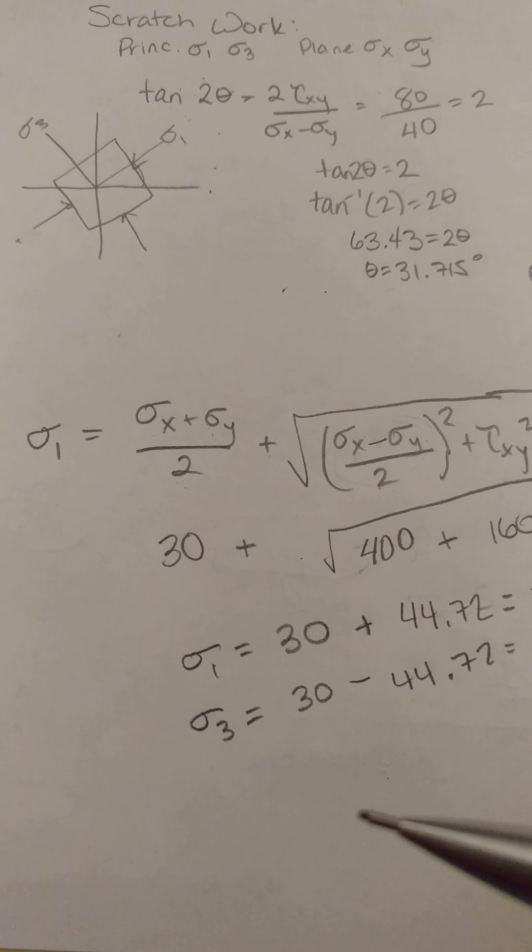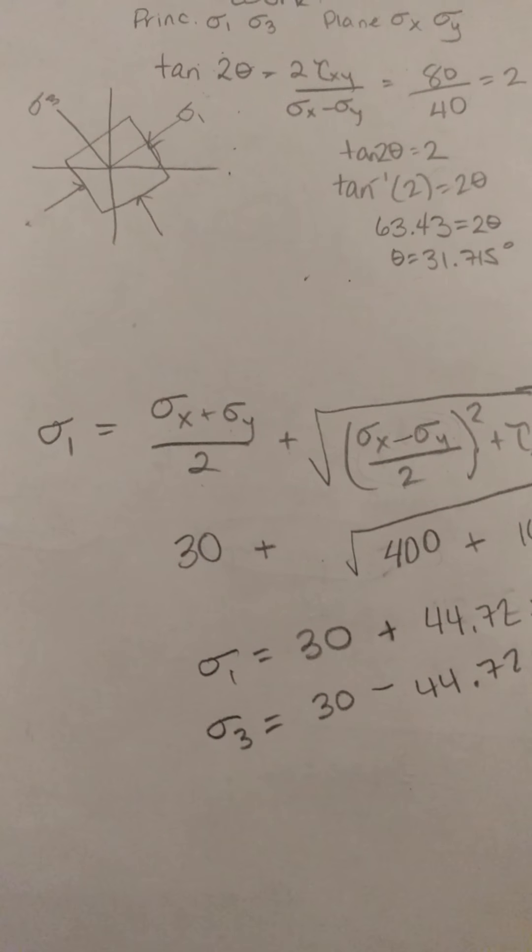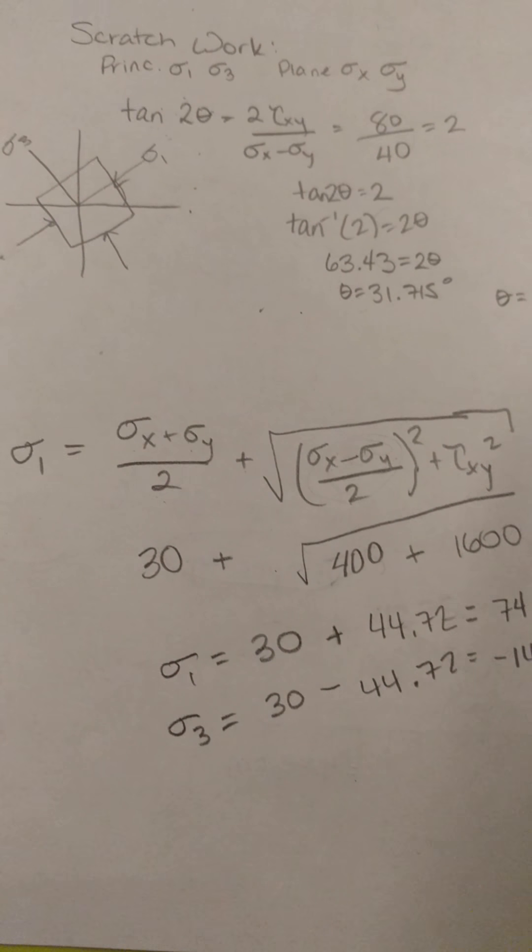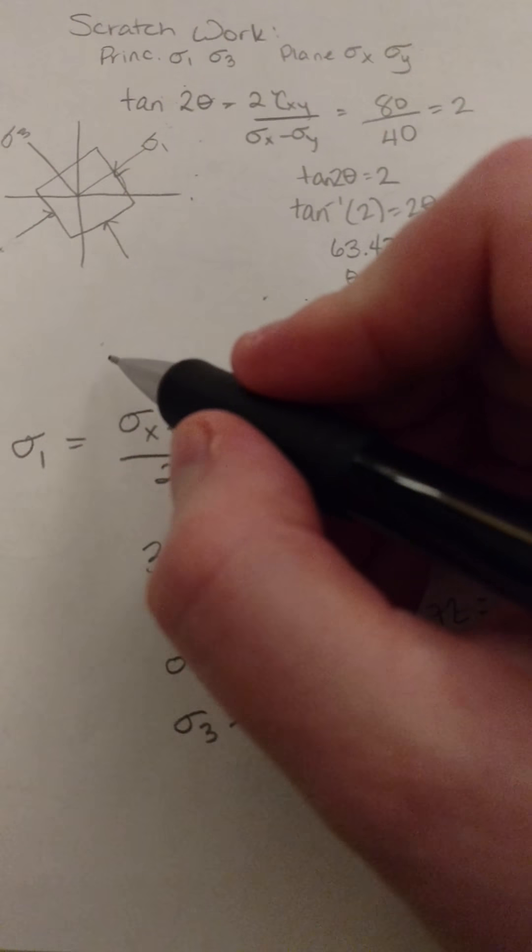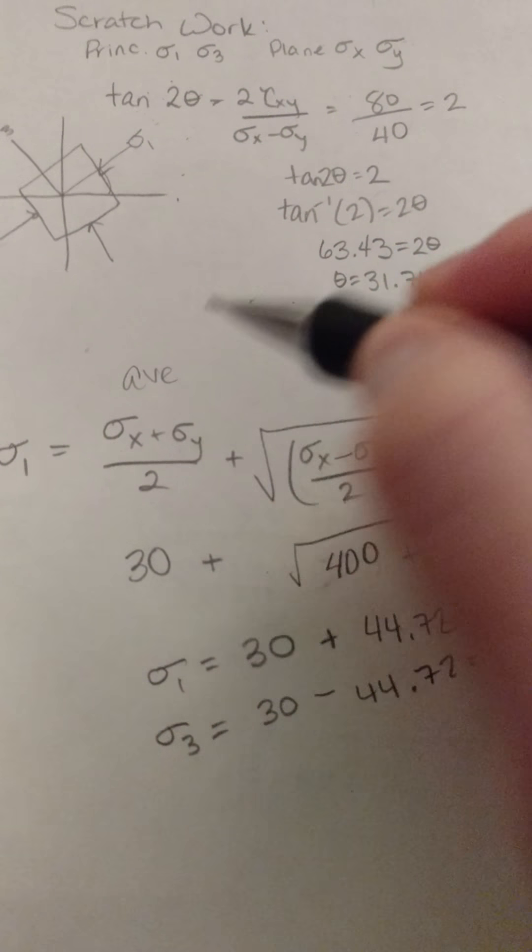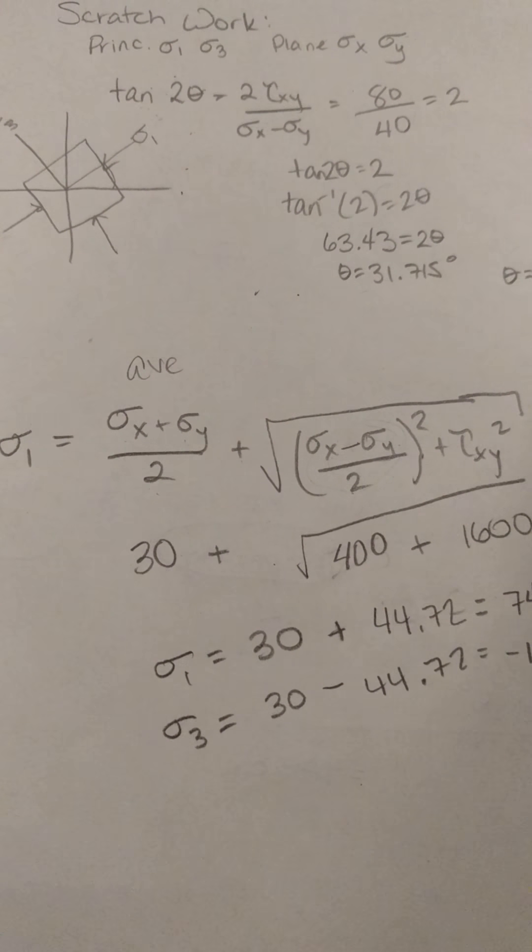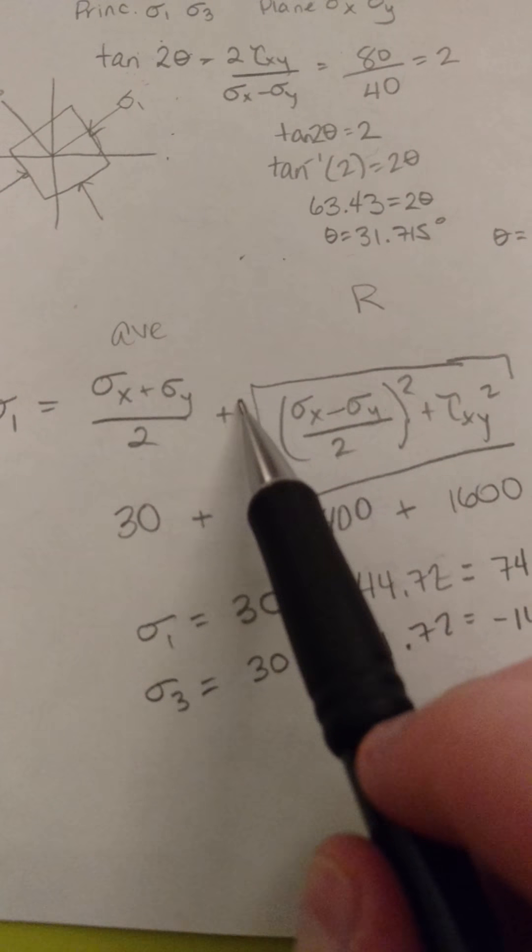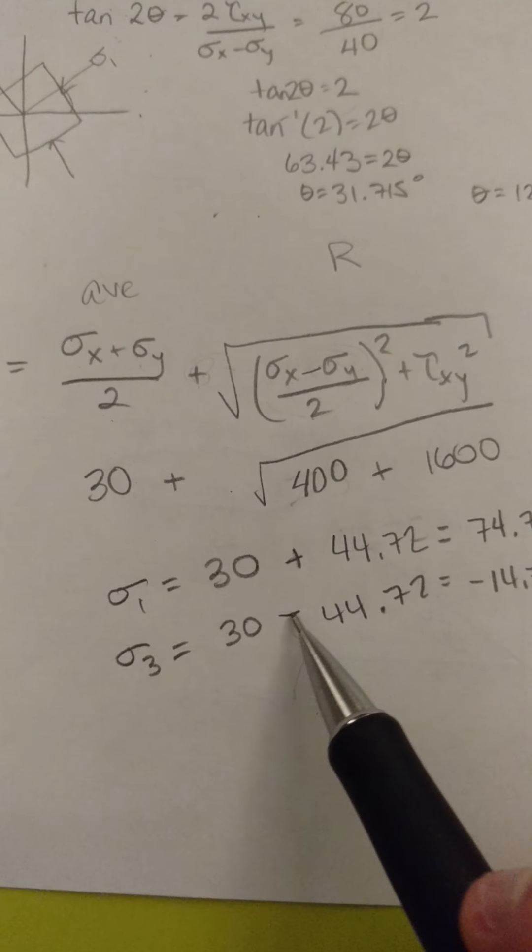You'll be asked to find your principal stresses after you've found the orientation to those principal stress planes. To do that, you're going to take the formula for your average normal stress, and you're going to take the formula for r. To get sigma 1, you're going to add those two together, and to get sigma 3, you're going to subtract them.